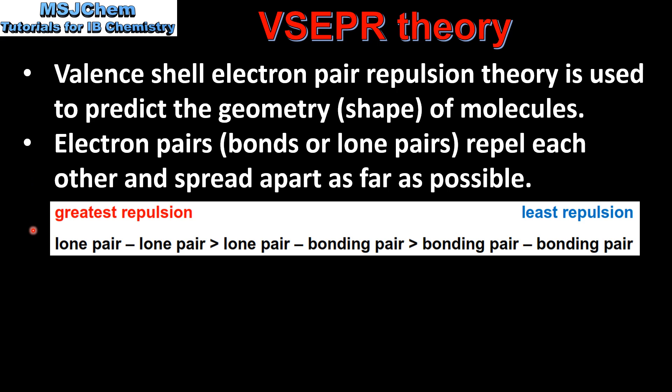Here we have the order of repulsion. The greatest repulsion is between lone pairs of electrons and the least repulsion is between bonding pairs of electrons.